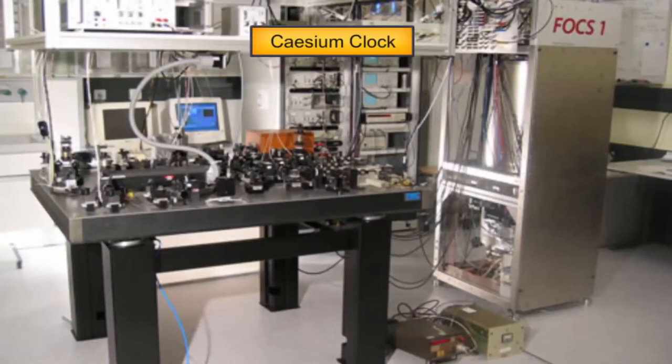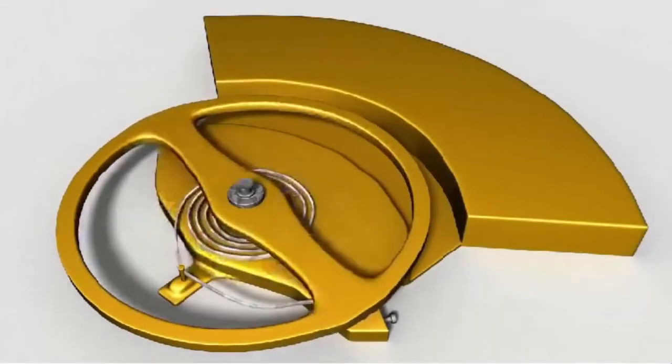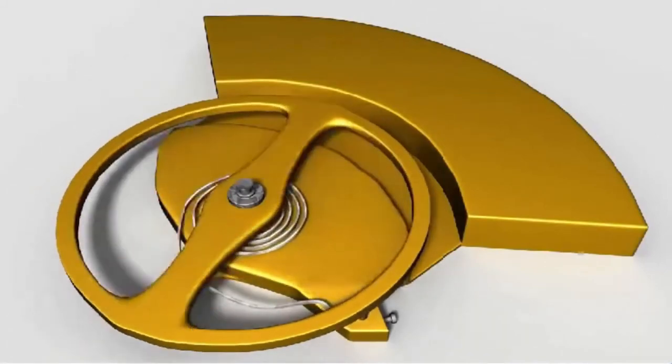In the caesium clock, the second is taken as the time needed for 9,192,631,770 vibrations of the radiation corresponding to the transition between the two hyperfine levels of the ground state of caesium-133 atom. The vibrations of the caesium atom regulate the time shown by this atomic clock, just as the vibrations of a balance wheel regulate the time shown by an ordinary wristwatch.